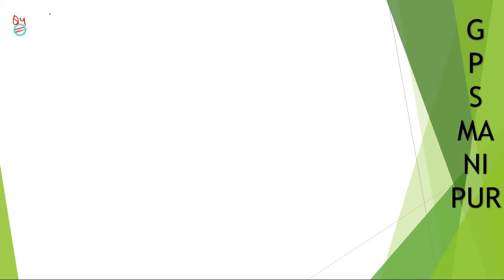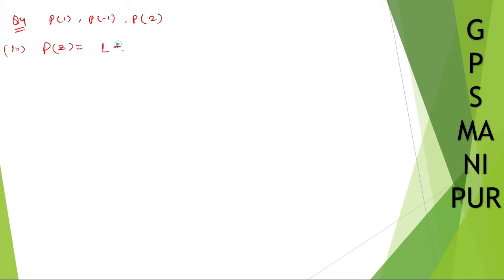Now we are doing question number 4. We need to find p of 1, p of minus 1, and p of 2 — roman number 3. p of z is equal to 1 plus 2z plus 3z squared minus z cubed.